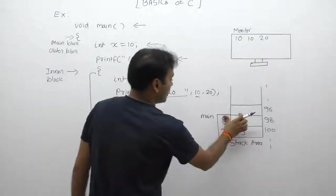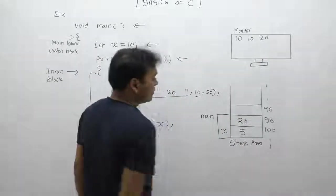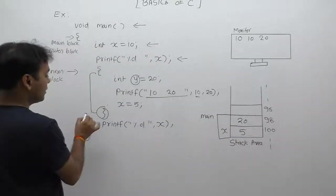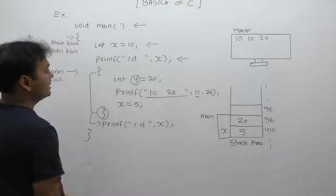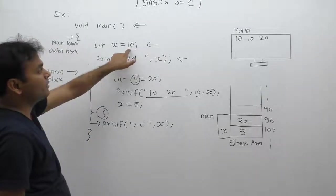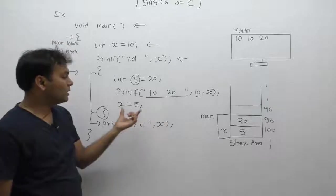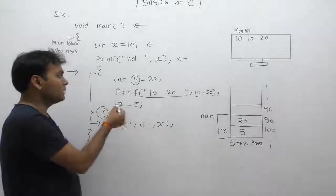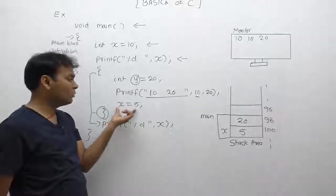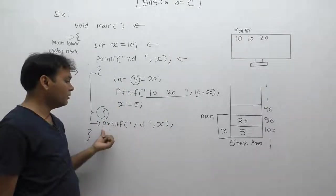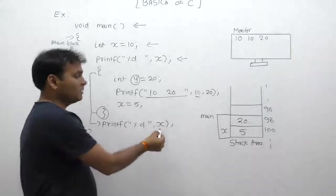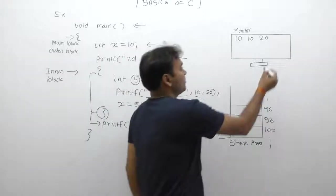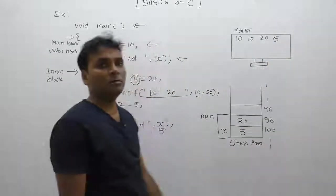After the inner block exits, we are now in the outer block and we display the value of x. Since x was modified to 5 inside the inner block, that change is reflected in the outer block as well. The current value of x is 5, therefore it will print the value of x as 5. This is the final output of this program.